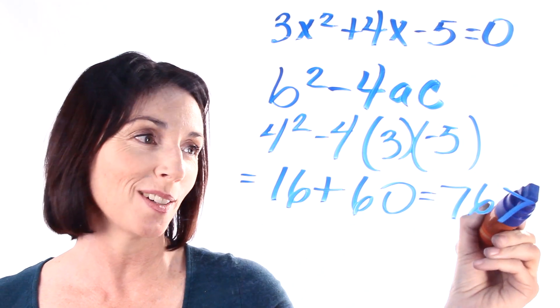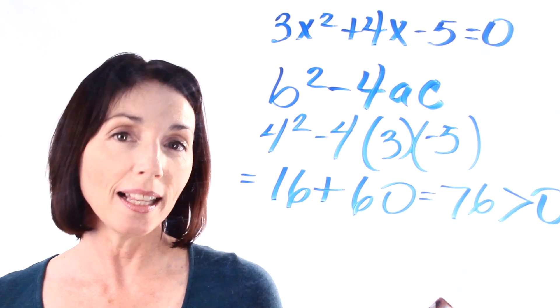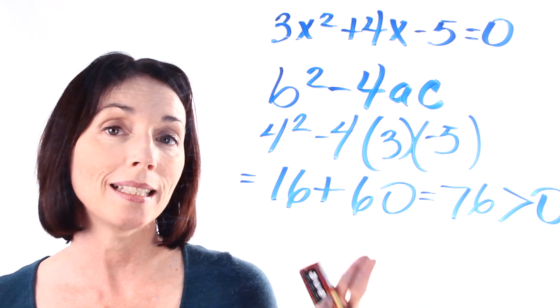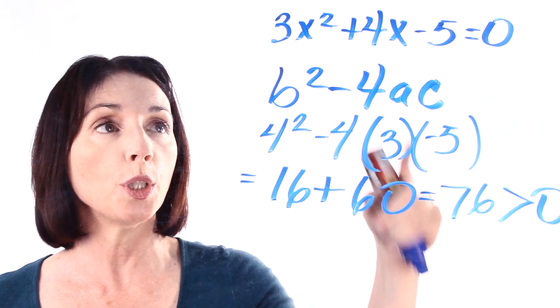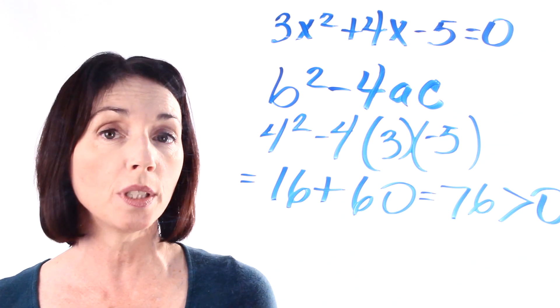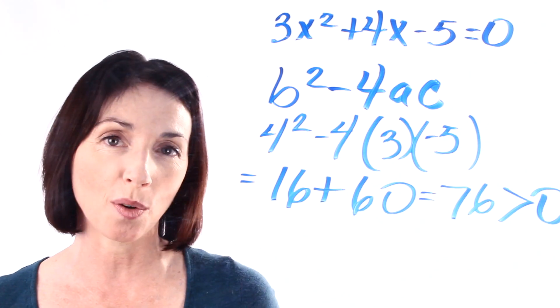76 is greater than 0, obviously. But what that tells us is that this quadratic equation has two distinct real roots. So when you plug these values into the quadratic formula, you'll end up with two different real numbers that will solve the equation.